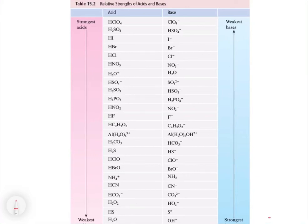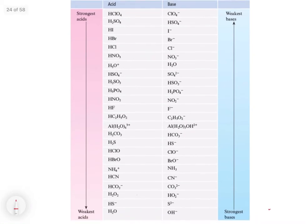In this video we're going to talk about the relative strengths of acids and bases, and we're going to use this chart — table 15.2 in the textbook. This chart is extremely powerful because it's going to explain a lot of things in terms of acid and base strength that we sort of just assumed when we were doing chapter four, but now we're really going to be able to explain everything in great detail. So if we look at this chart, we have a list of acids and then we have a list of their conjugate bases.